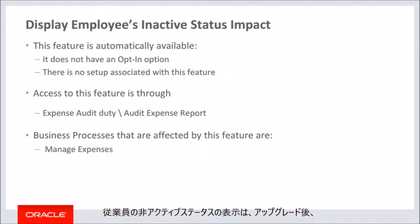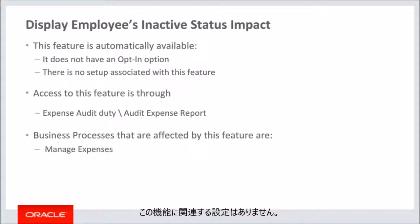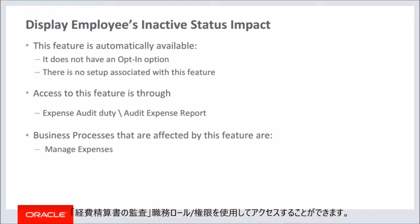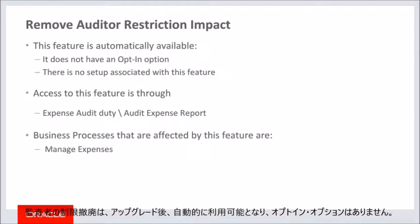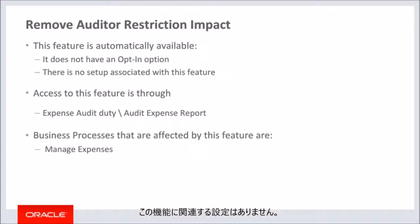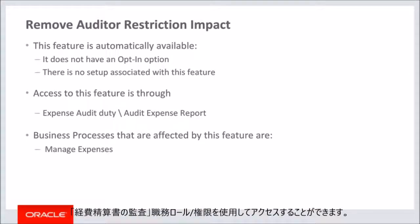Display employees in active status is automatically available after the upgrade and does not have an opt-in option, and there is no associated setup. It can be accessed using the audit duty rule and privilege audit expense report. The business process associated with this feature is manage expenses. Similarly, remove auditor restriction is automatically available after the upgrade, accessed using the audit duty rule and privilege audit expense report.